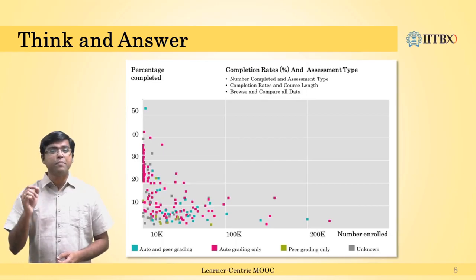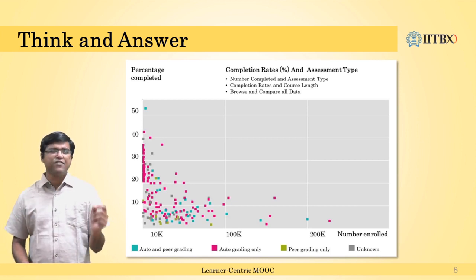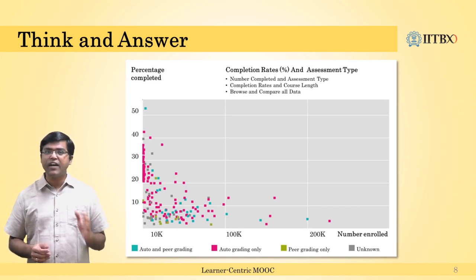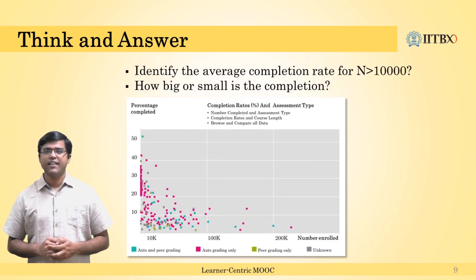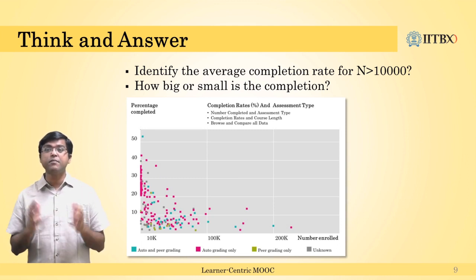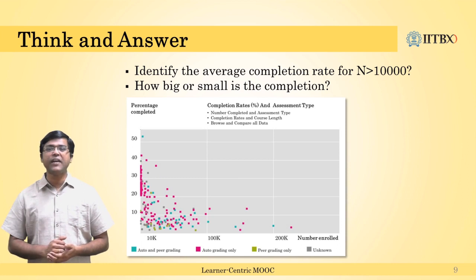Let us now pause for a minute and examine this graph more carefully to see what exactly the problem is about and one of its key implications that instructors should take away. The X axis of the graph shows the number of people enrolled in the course and the Y axis shows completion rates. Let us focus our attention on all the courses that have enrollment greater than 10,000 learners. Can you identify the completion rate region where you see the maximum concentration of these data points, and calculate how large or small this number actually is?